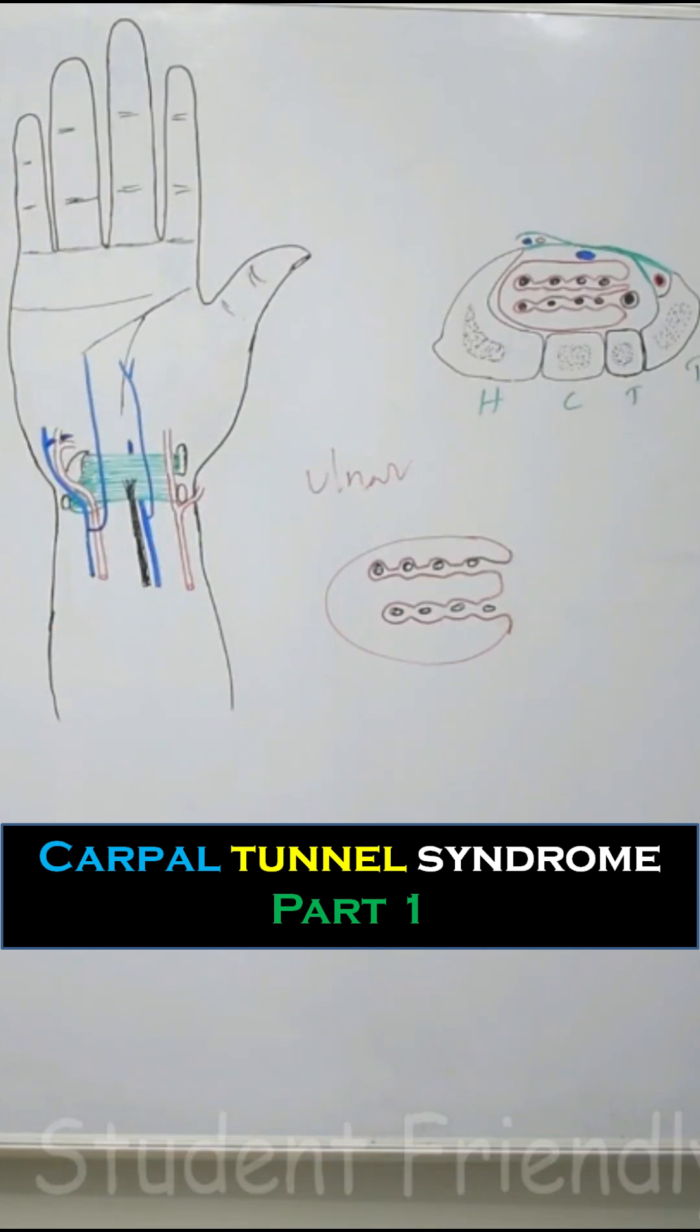Paresthesia means mild compression which leads to tingling sensation over the lateral three and a half fingers and palmar surface. If it is still more compression which leads to hypoesthesia that means diminished sensations.